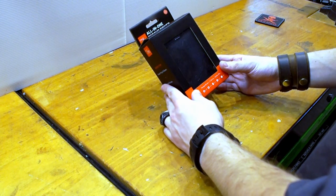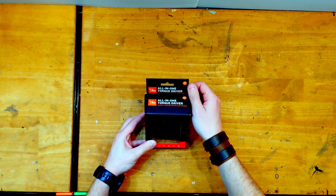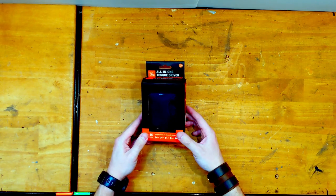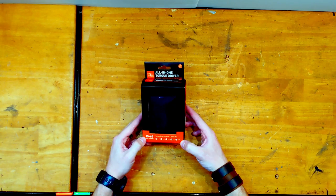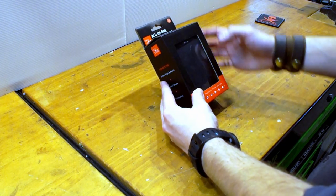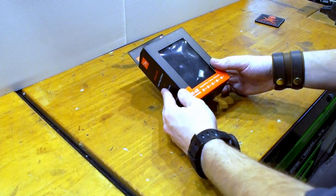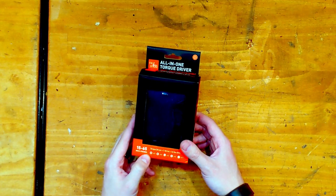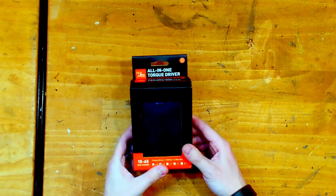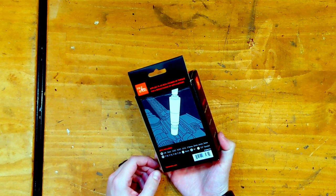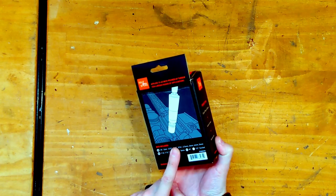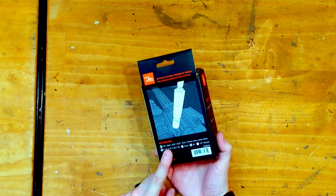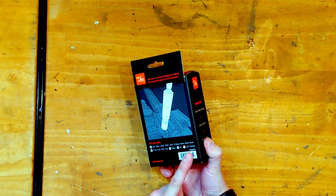The All-in-One Torque Driver Kit from Fix It Sticks. They do two product lines - a lot of their stuff is interchangeable between the two, but they do a lot of cycling equipment too. This is from their firearms shooting line. It's set up to do 15 to 65 inch pounds. It comes with a whole variety of bits in a nice little box. It describes the bits you're going to get here on the back. Basically covers all your standard scope and firearms screws, and it also has a quarter inch socket.